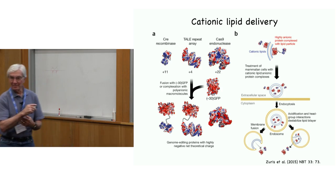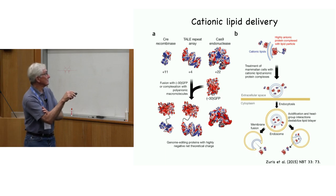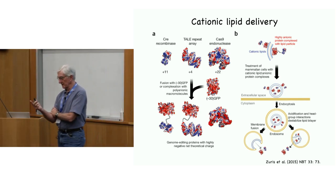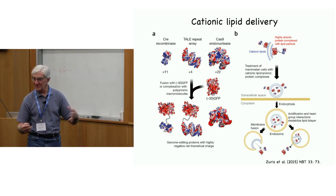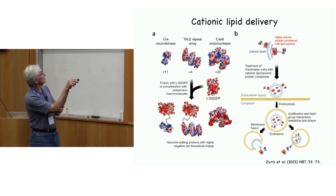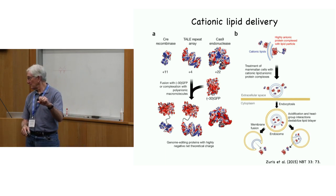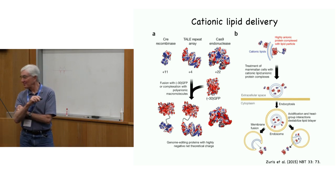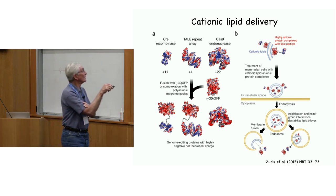People have devised alternative delivery methods. Work from David Liu's lab explored lipid delivery using cationic lipids, which are positively charged and interact readily with the negatively charged cell surface. However, many proteins you'd like to deliver — Cre recombinase, TALENs, Cas9 — are positively charged and don't associate readily with these positively charged lipids. Their solution was to attach an artificially negatively charged GFP or otherwise generate negatively charged versions of these proteins, then associate them with lipids for cell delivery.